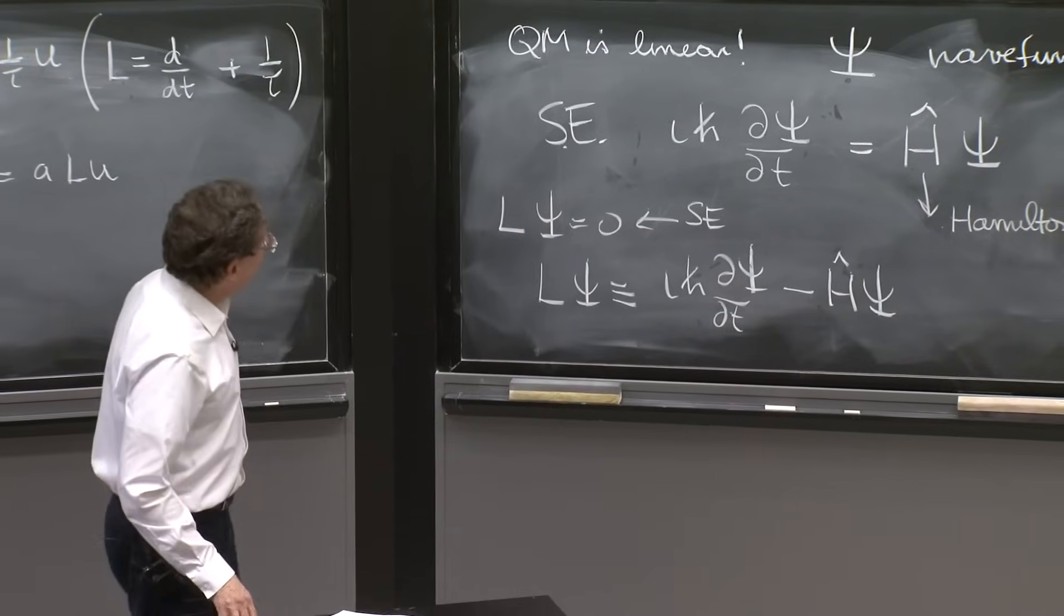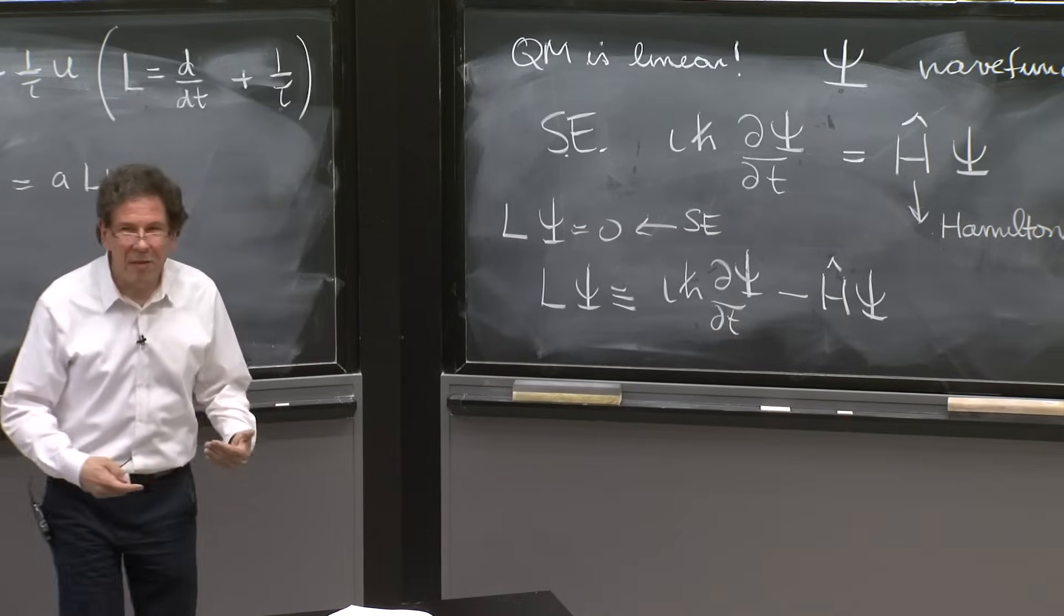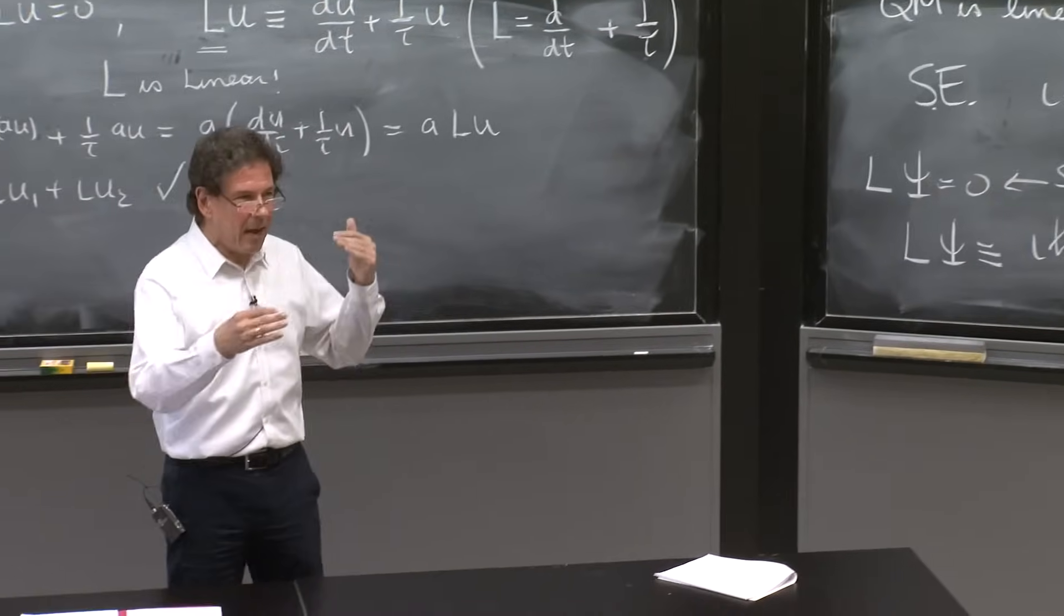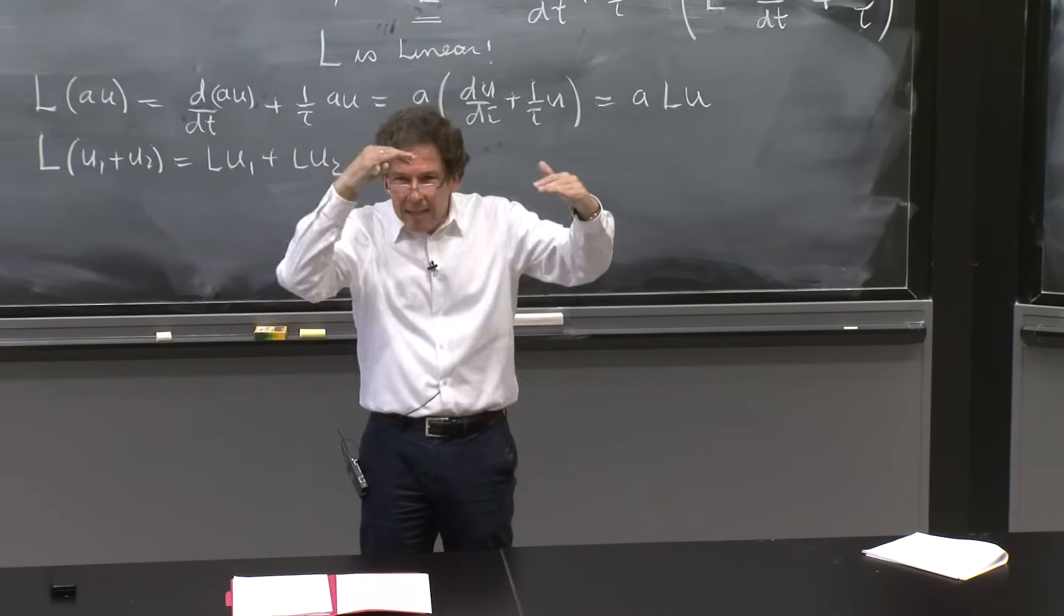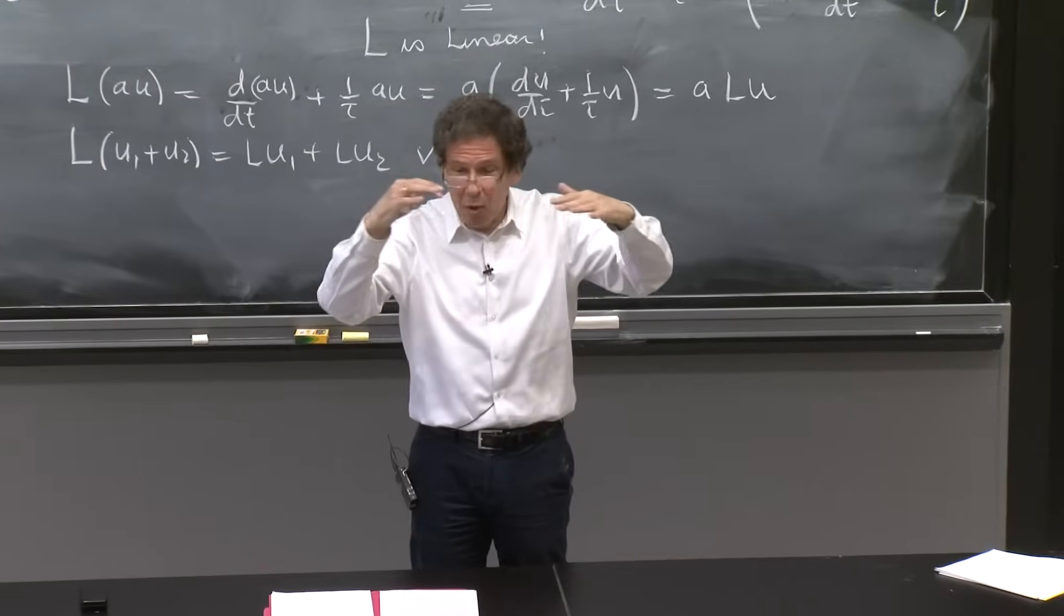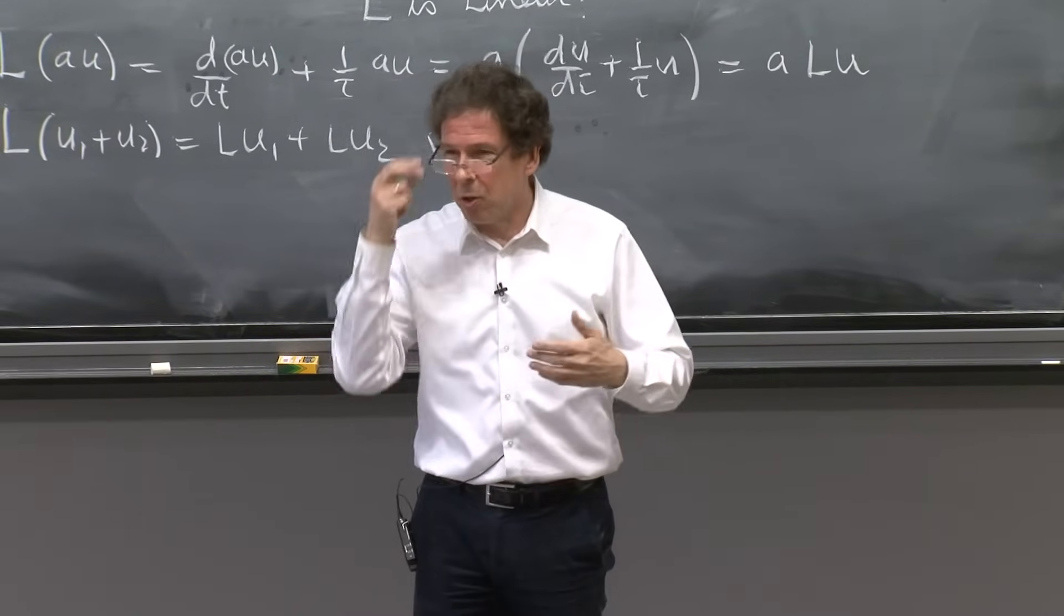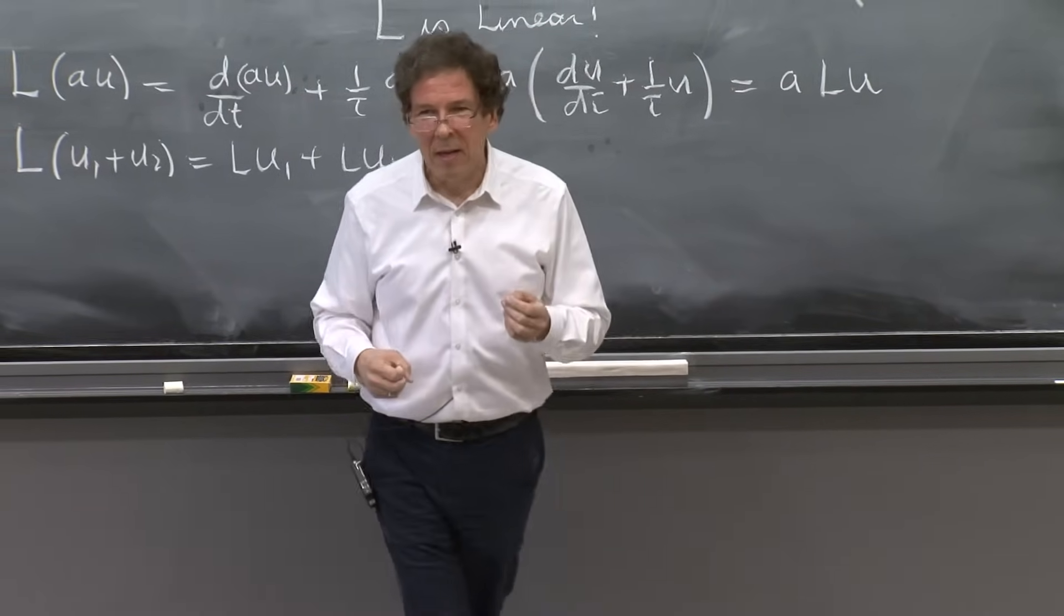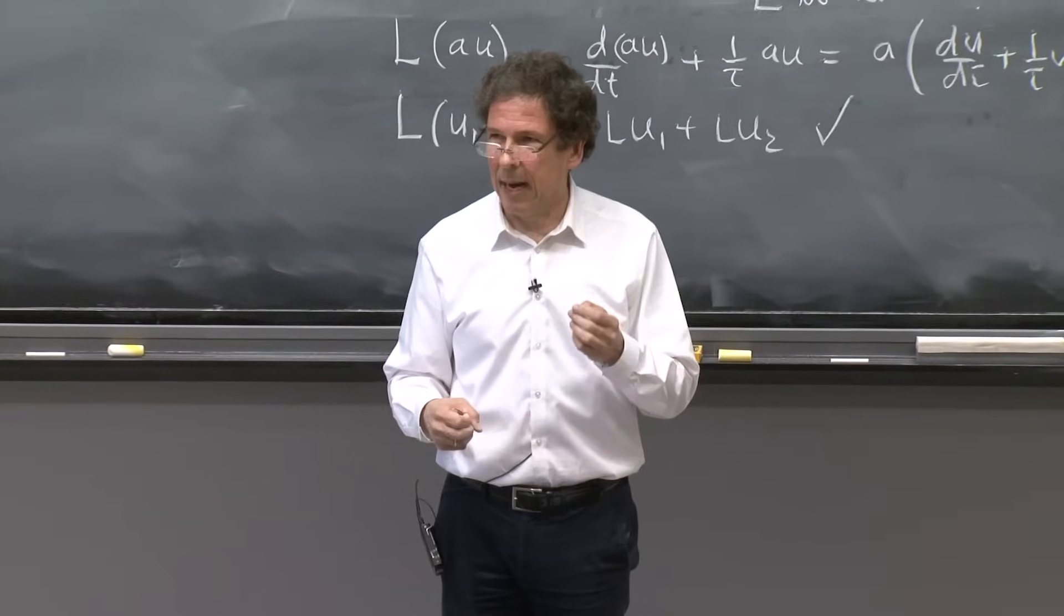And the Schrodinger equation is going to be a linear equation. And therefore, you're going to have the great advantage that any time you find solutions, you can scale them. You can add them. You can put them together, combine them in superpositions, and find new solutions. So in that sense, it's remarkable that quantum mechanics is simpler than classical mechanics.